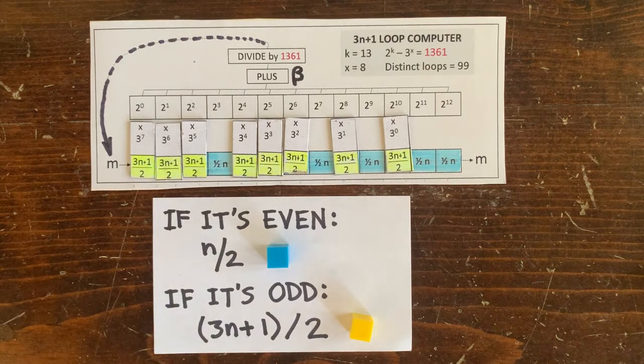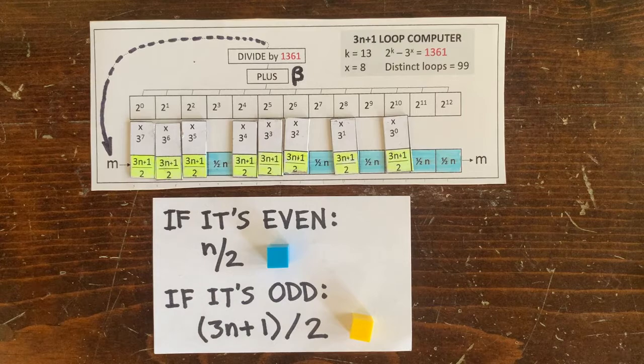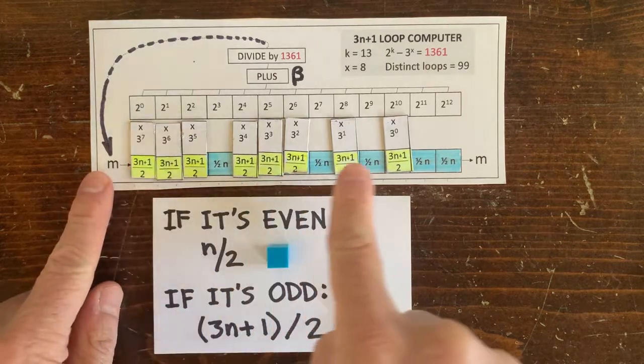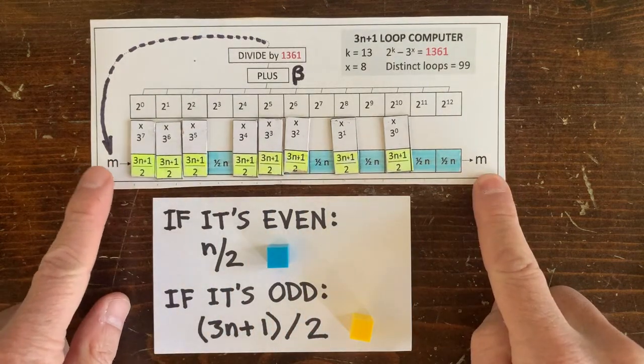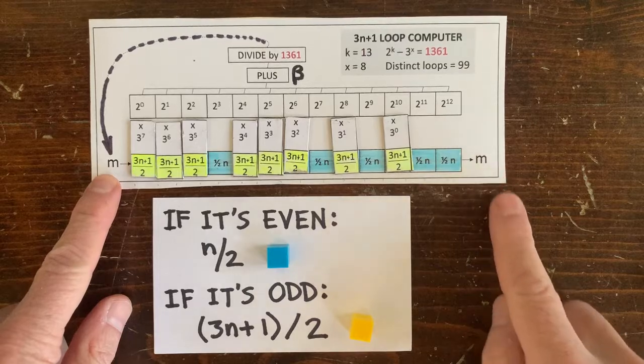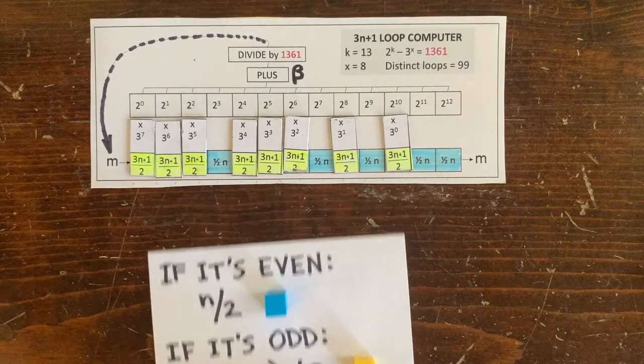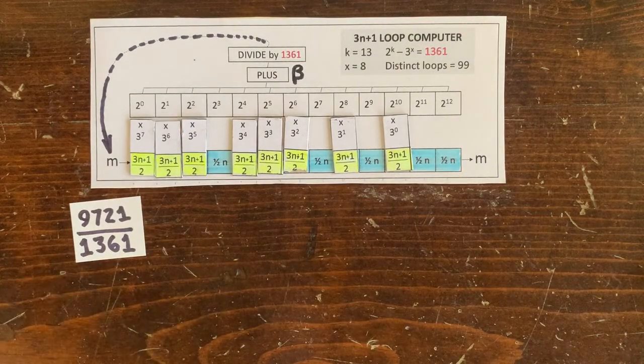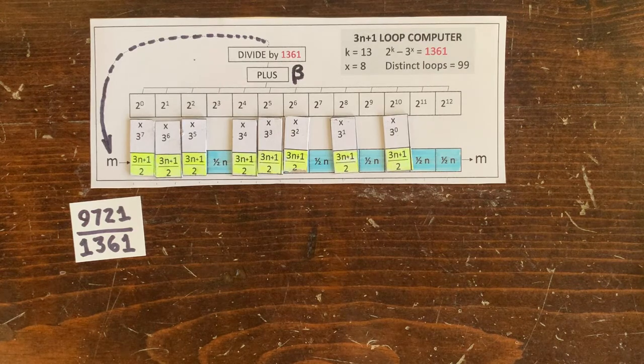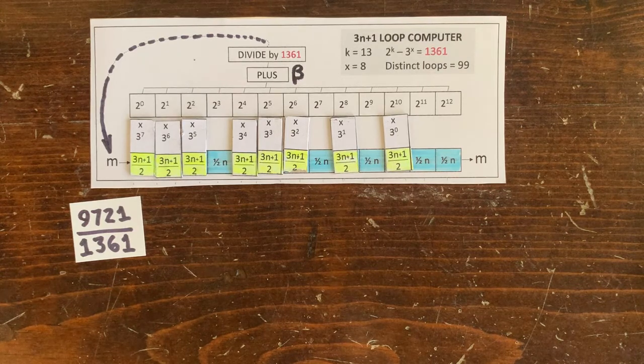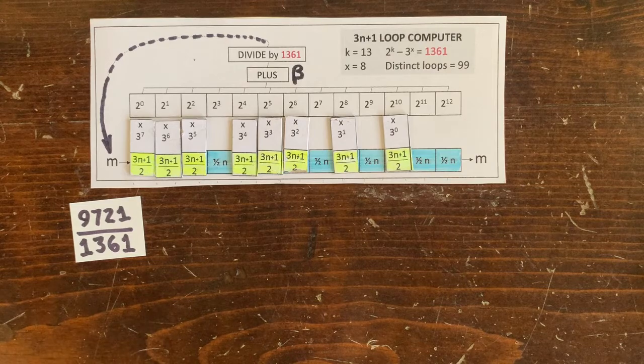Hi, let's look more into loops for 3n plus 1. Given any operation sequence, we can solve for the m that if you put it into the operation sequence, you get the same m out. That makes a loop. Now, every m you try turns out to be a fraction, not an integer. So nobody's found any integer loops out there for 3n plus 1. And in fact, we're trying to prove that there are none.